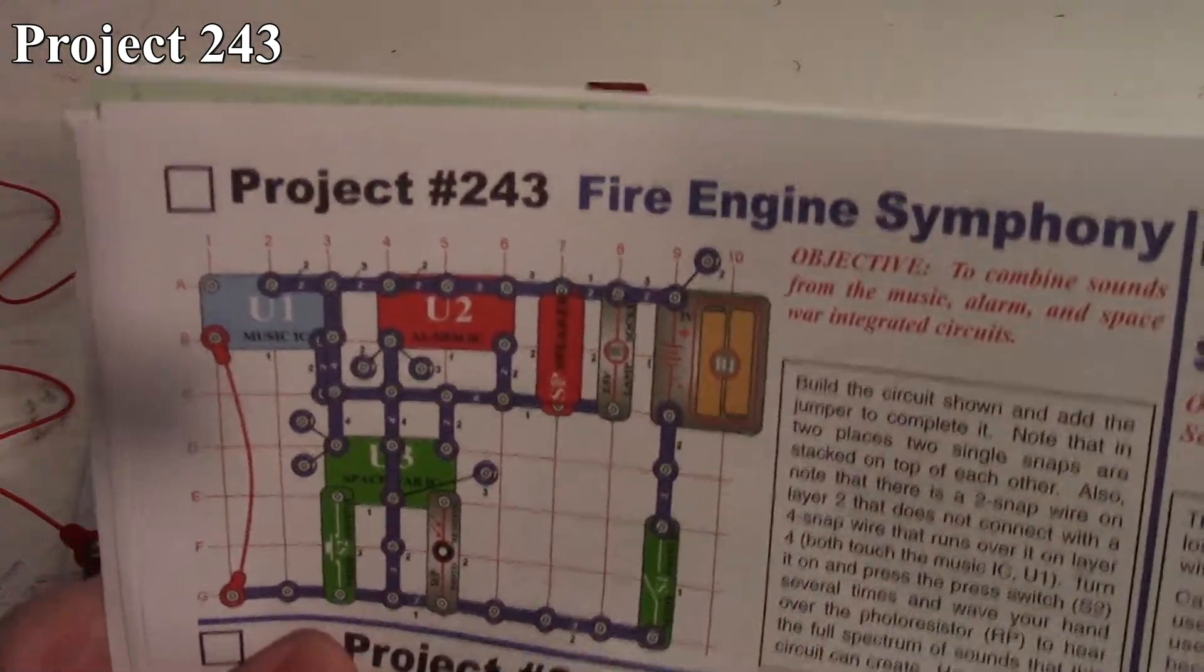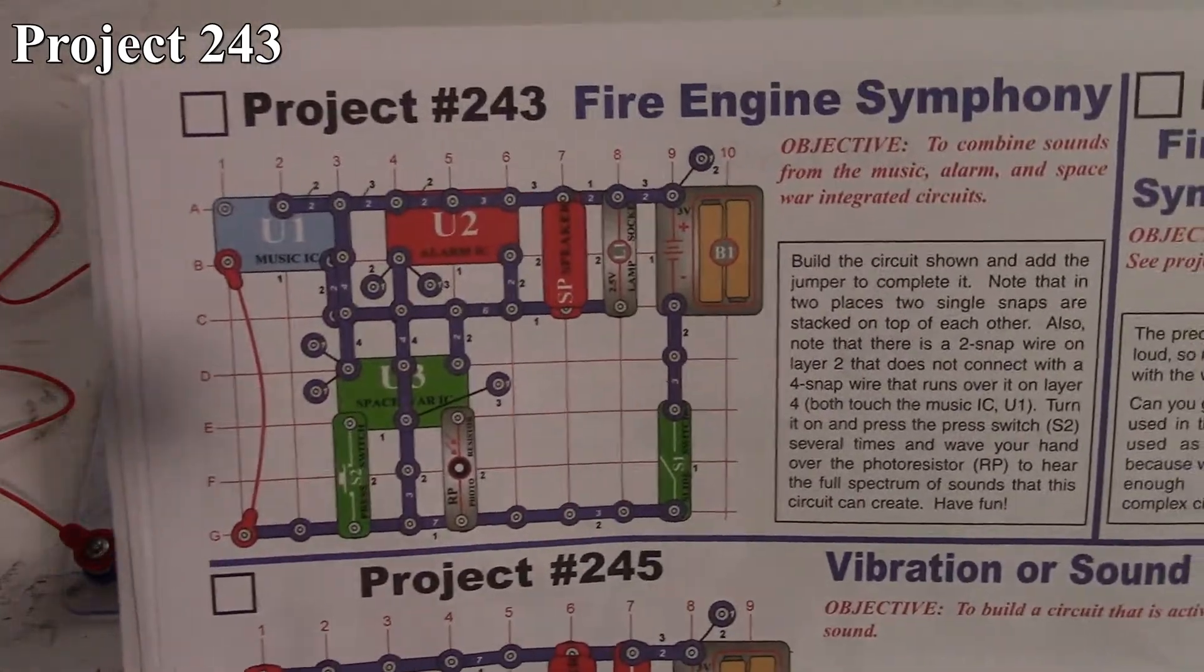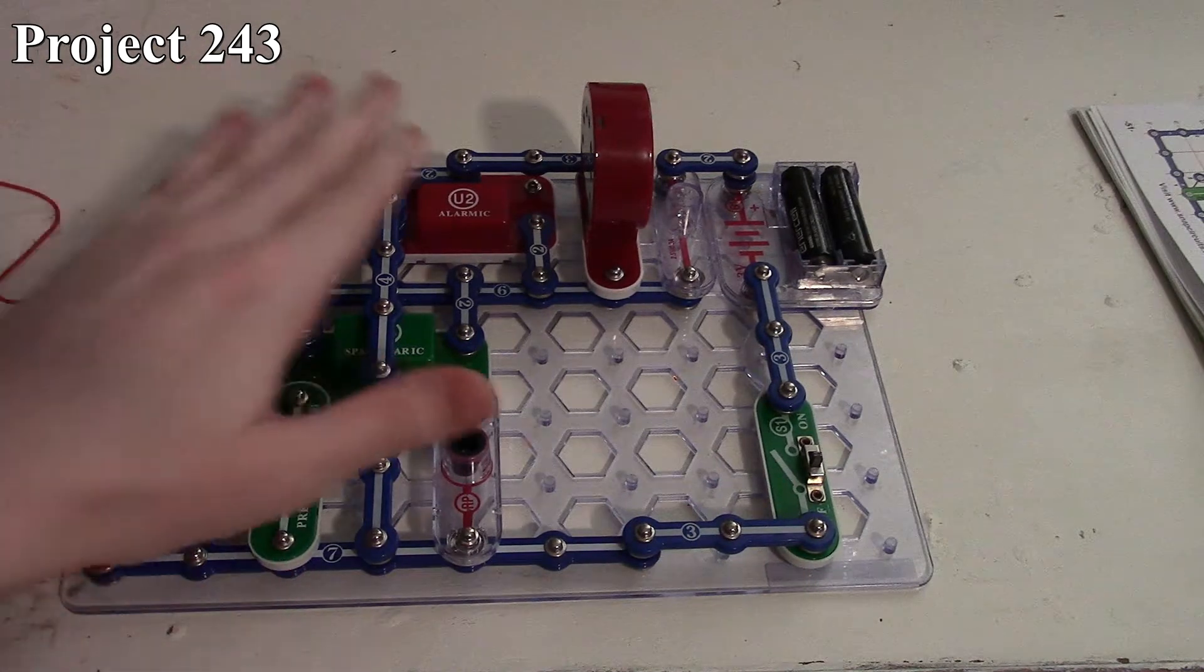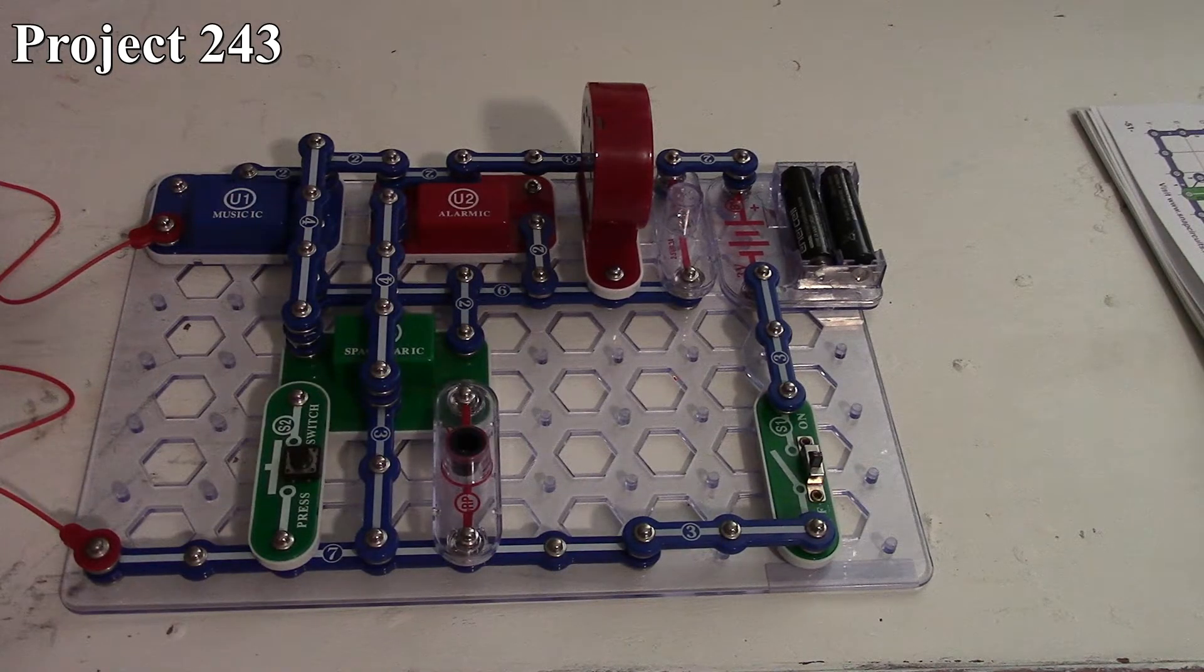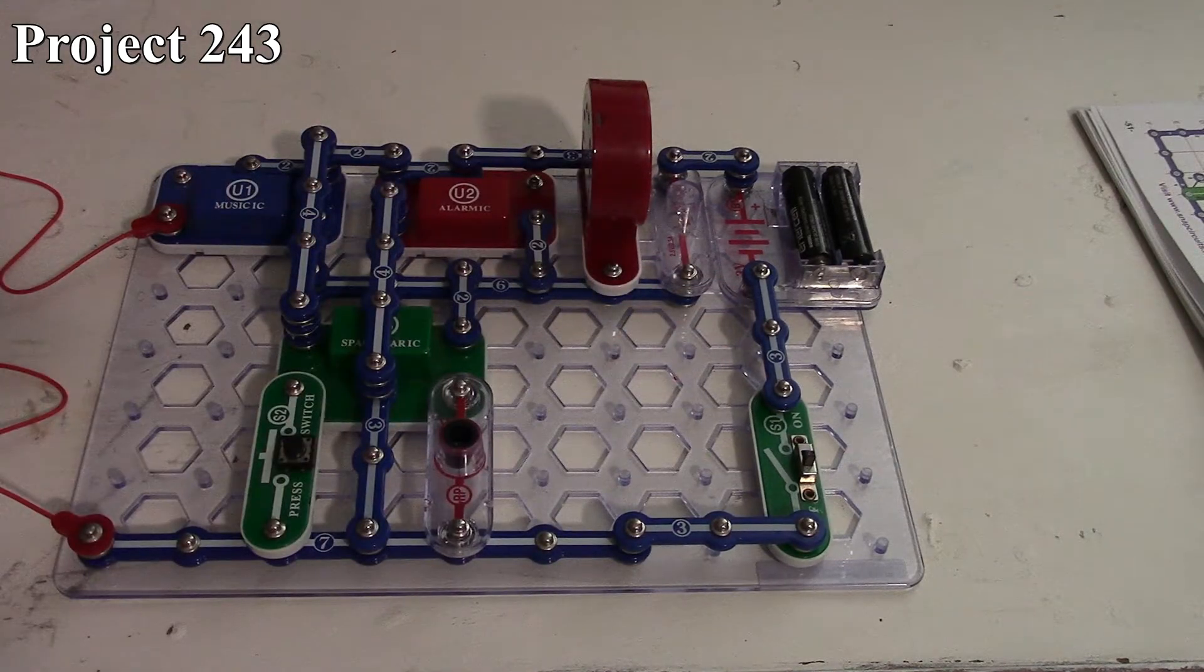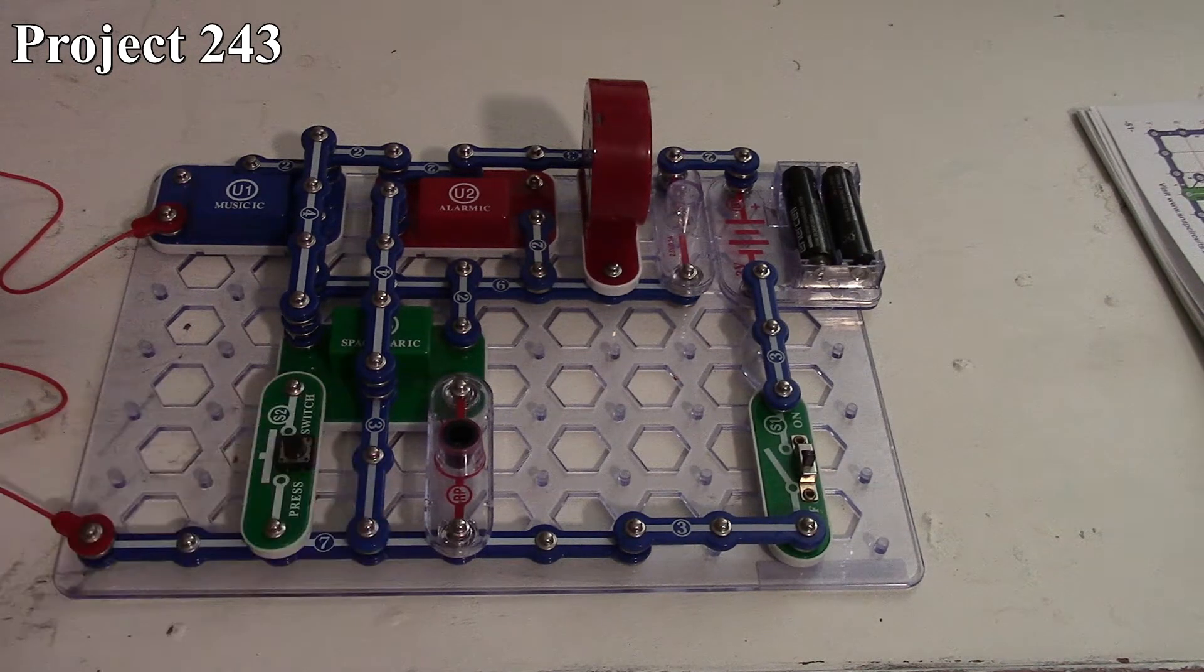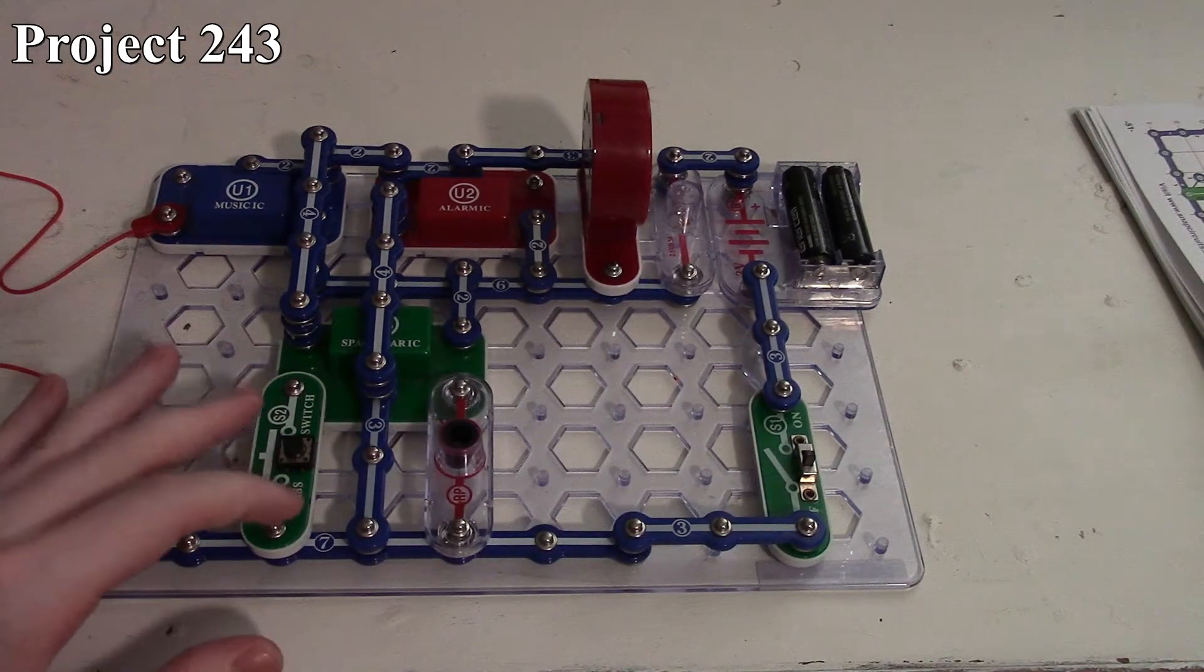Here we're at project 243, the Fire Engine Symphony. Here's what it looks like in the book, there it is on the board. We're using our 3-volt source with our slide switch, but we're using all three of our ICs: our Music IC, Alarm IC, and Space War IC, to all get mixed together into an output on our speaker. We also have our 2.5-volt lamp here, which will give us a visual indication.